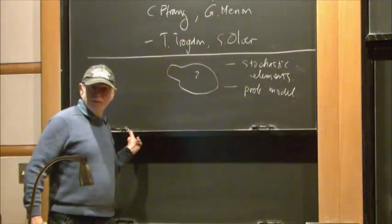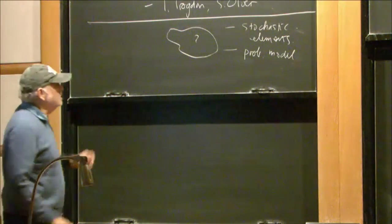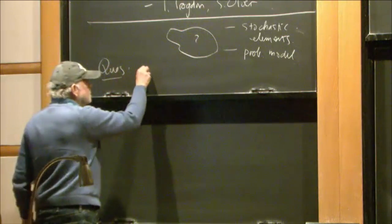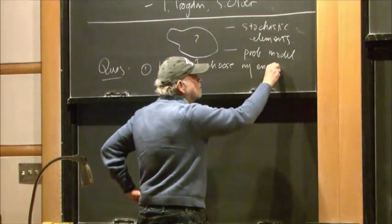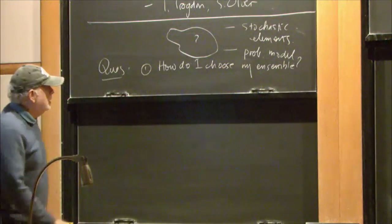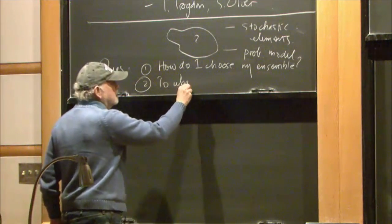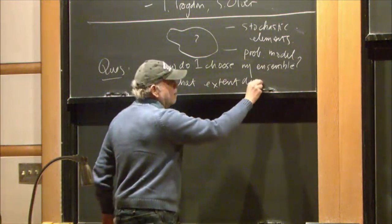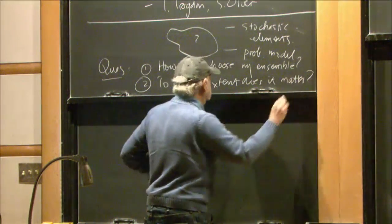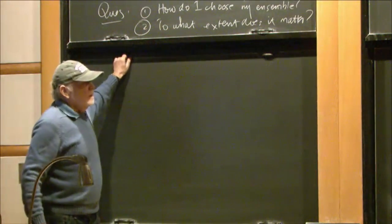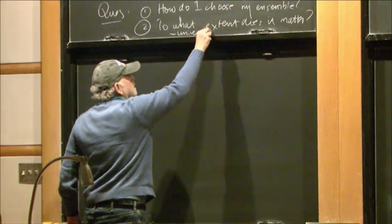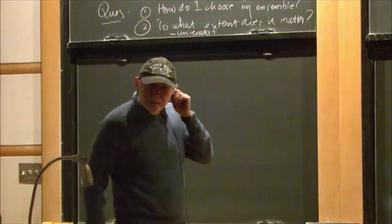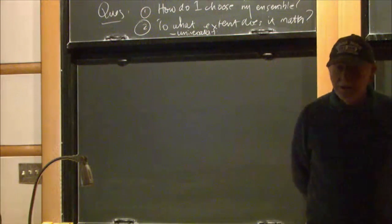So you want to come up with some probabilistic model. And then you face two questions, which are basic questions to every statistician. The first one is, how do I choose my ensemble? And to what extent does it matter? So in particular, I'm thinking I should ask you to have in mind questions of universality.